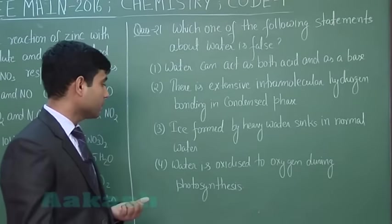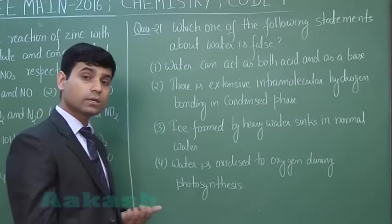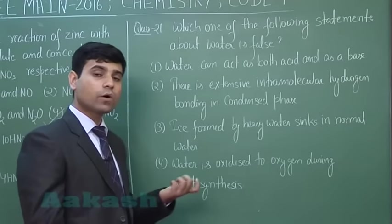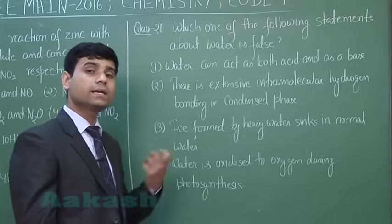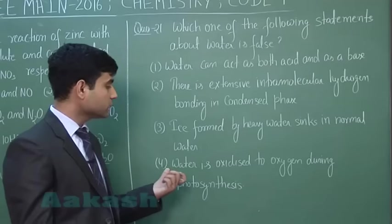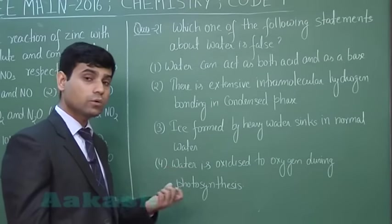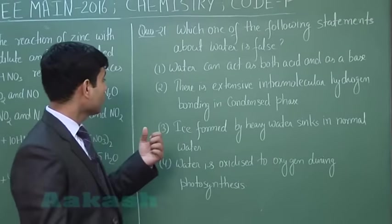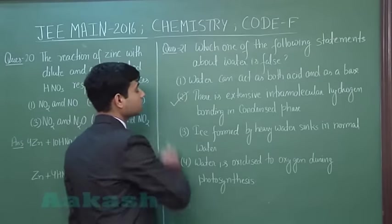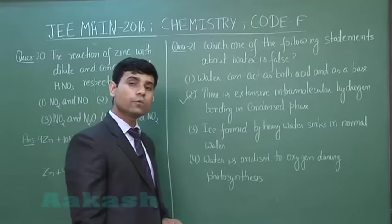Statement 2 is false. Statement 3 says ice formed by heavy water sinks in normal water — this is true because ice formed by heavy water has higher density. Statement 4 says water is oxidized to oxygen during photosynthesis — this is also true. Therefore, the correct answer is option number 2, which is the false statement.